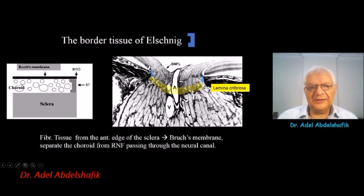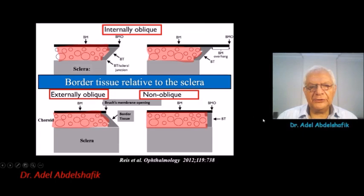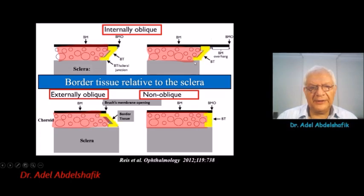As you can see here in this histology, this is the location of the bordered tissue of Elshning. The bordered tissue of Elshning can be, in relation to the sclera, either externally oblique, but in this situation can be vertical or can be internally oblique.